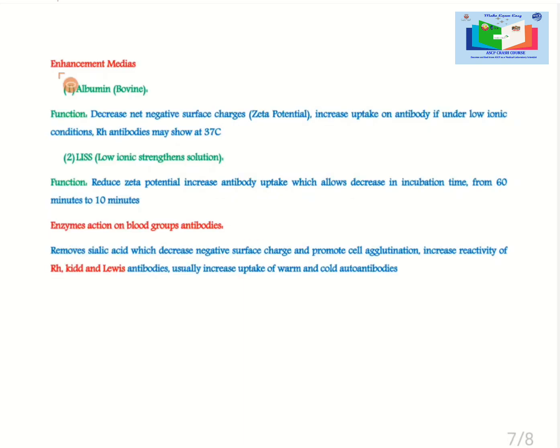We use the following medias in blood bank in order to speed up the reactions. Albumin or bovine albumin function: decreases net negative surface charges zeta potential, increases uptake of antibody if under low ionic strength condition. RH antibodies may show at 37 Celsius.